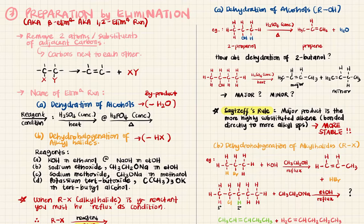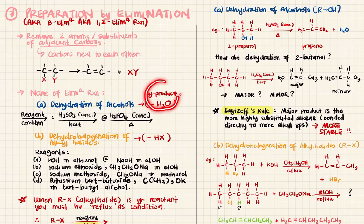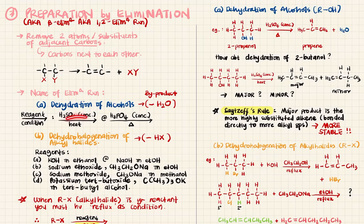The two elimination reactions for alkenes are: first, dehydration of alcohol, which means we are going to remove the water molecule from our alcohol — so water is our byproduct. What is important is that we need to know the reagent and condition in order to perform this reaction.